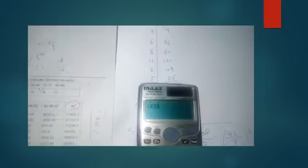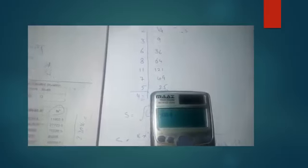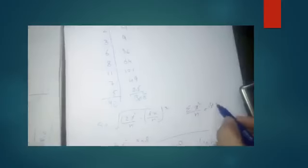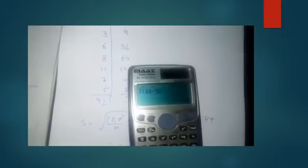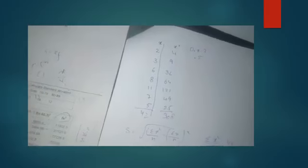So: 42 divided by 7 gives 6, and 6 squared is 36 — this is the second part. Then 308 divided by 7 gives 44 — this is the first part. So simply 44 minus 36 equals 8, and under root of 8 gives 2.82. Same answer: 2.82.